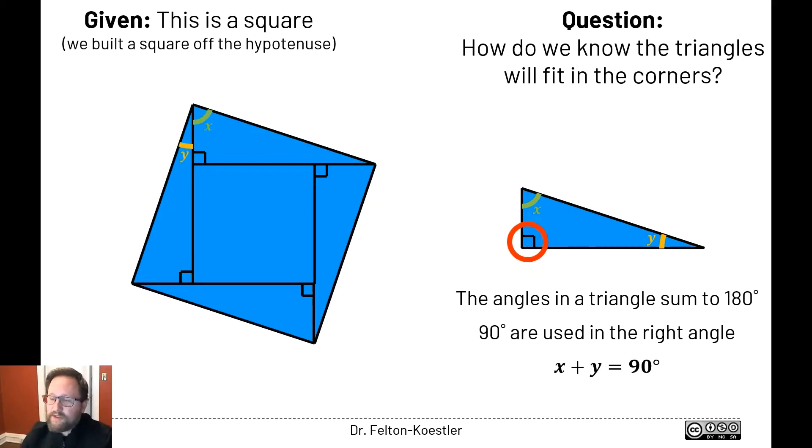If we look over at our left puzzle, we see that we have the x and y angles coming together. Since we already know that that's 90 degrees, that tells us they're going to fit nicely into that corner without any overlap.